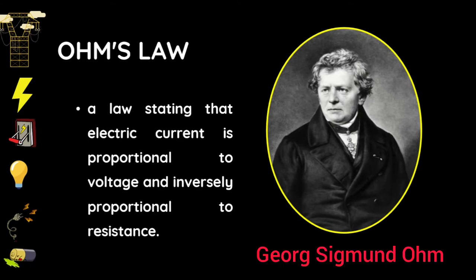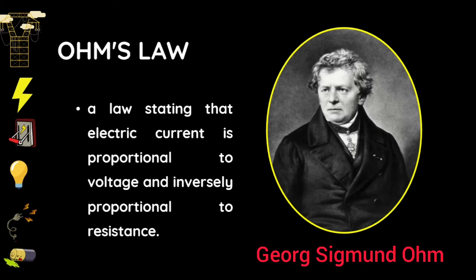George Simon Ohm was a German physicist, son of a locksmith and gunsmith, born in Erlangen, Bavaria on March 16, 1787. As a high school teacher, Ohm started his research with the recently invented electrochemical cell invented by Italian Count Alessandro Volta. Using equipment of his own creation, he was able to show that the current that flows through a wire is proportional to its cross-sectional area and inversely proportional to its length. Unfortunately, when Ohm published his findings, his ideas were dismissed by his colleagues.